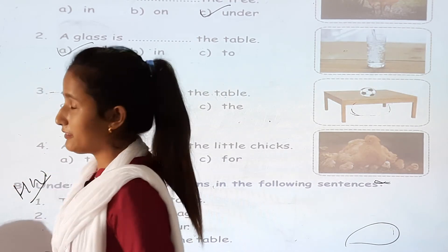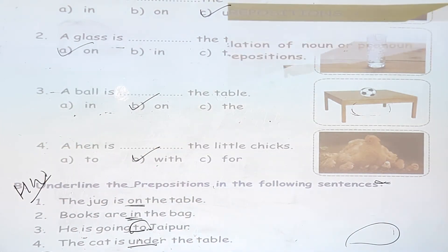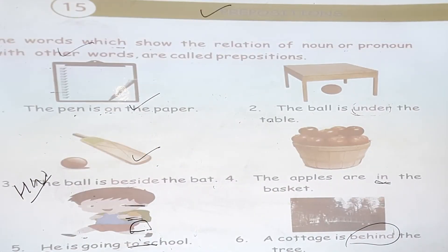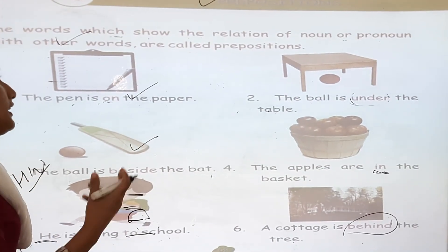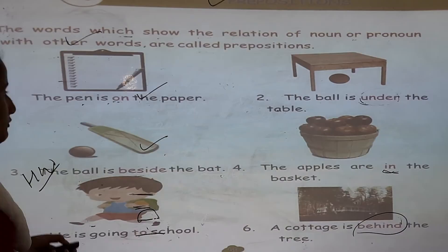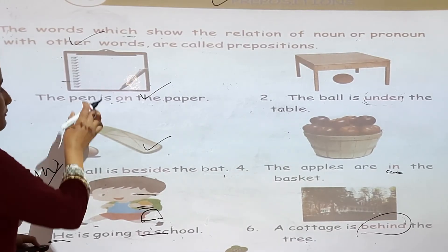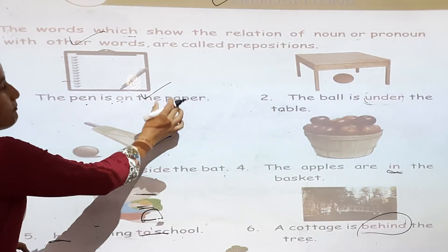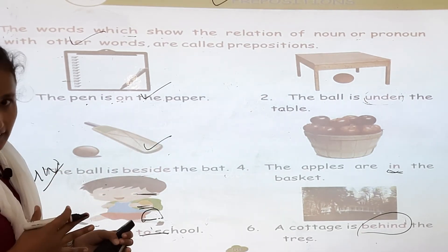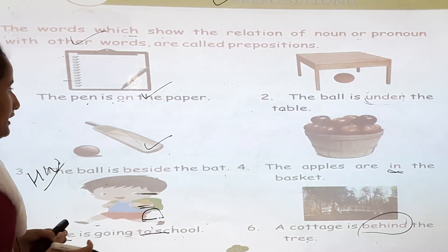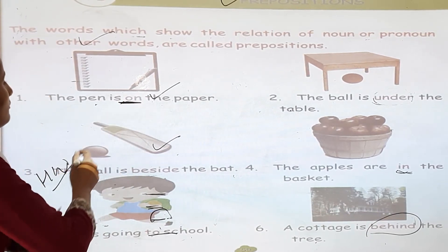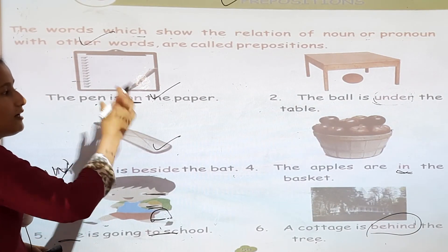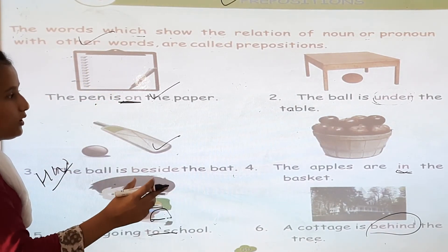We have finished chapter 15. What is a preposition? The word which shows the relations of a noun or a pronoun with other words is called a preposition. For example, pen and paper are different things, but the word 'on' joins them — so 'on' is a preposition word.